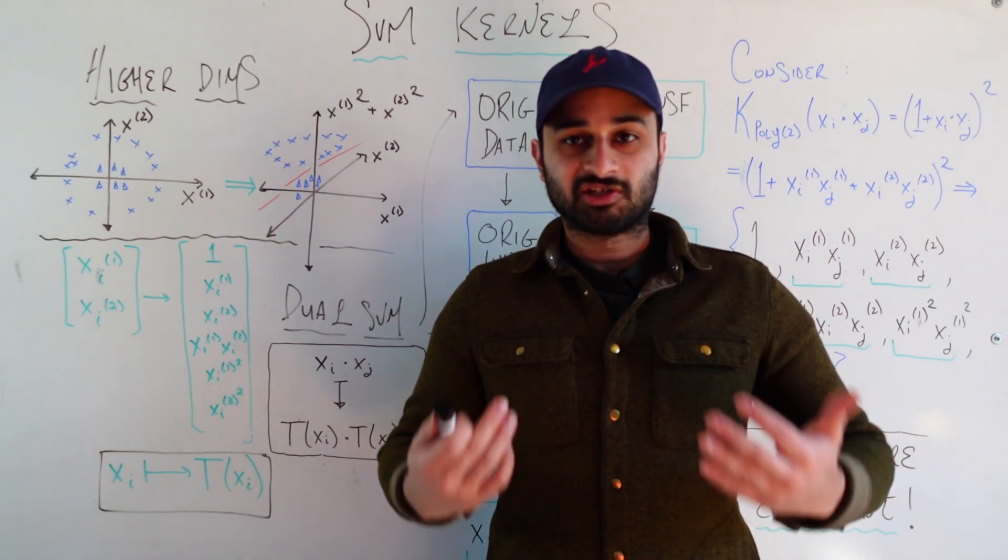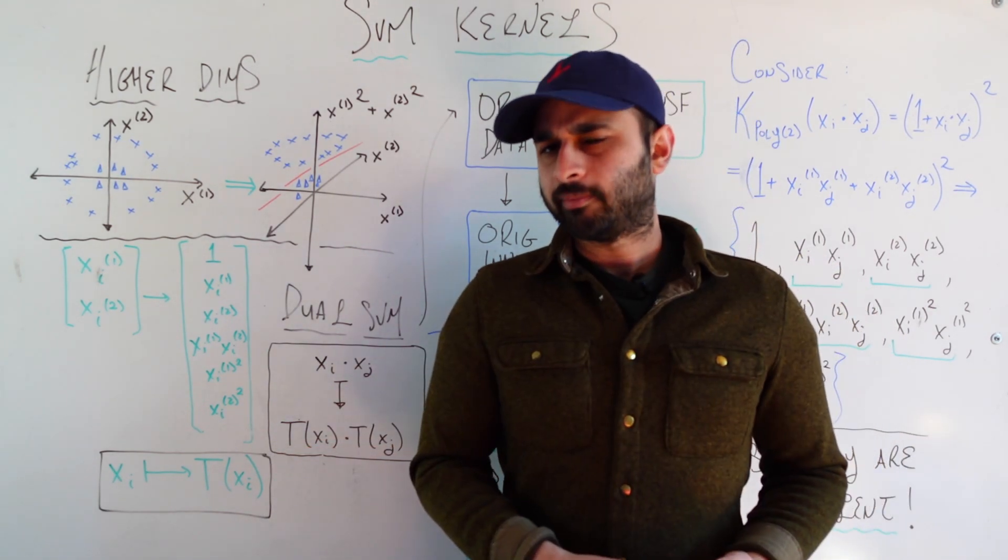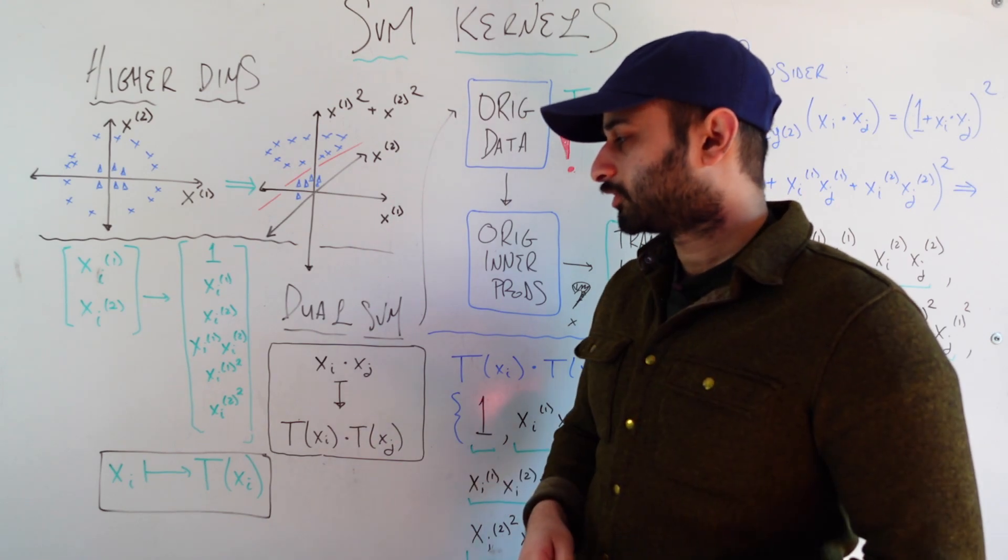After we've taken these inner products between transformed vectors, we can just run the SVM problem regularly and then we can get some answer. So the main point is that now, after we transform the data, all we care about is actually just the inner products between the transformed vectors.